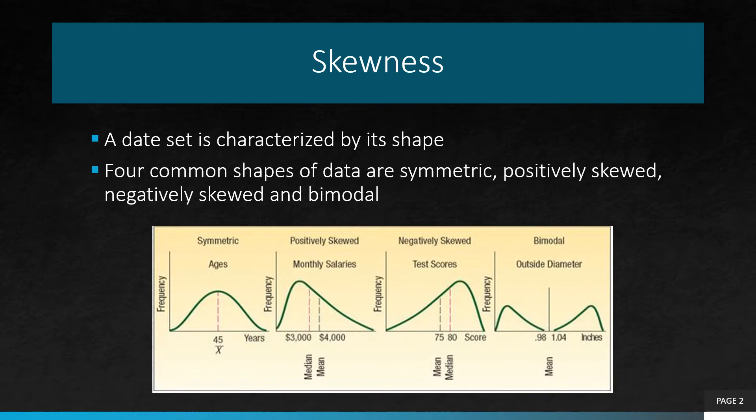A set of values is skewed to the right, or positively skewed, if there is a single peak and the values extend much further to the right of the peak than to the left. In this case, the mean is larger than the median.